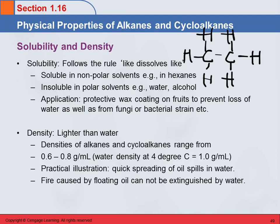A polar molecule is one that has a more positive end and a more negative end. Usually when you look at the structure, it's lopsided — it's not very symmetrical. Ethane is very symmetrical. There are two carbons surrounded by hydrogens, and you can see there's not one end that's different than the other. All of the alkanes are non-polar.